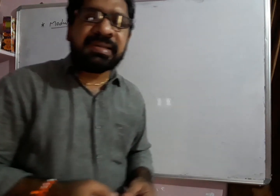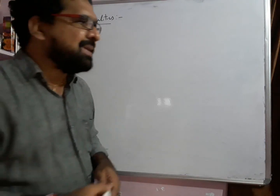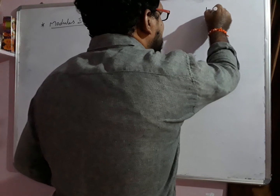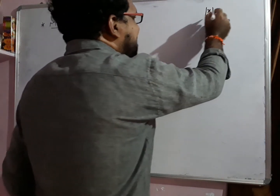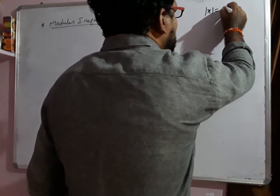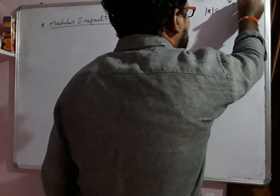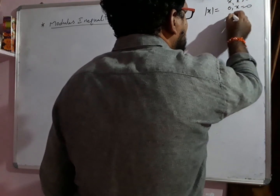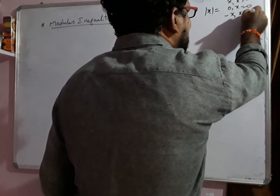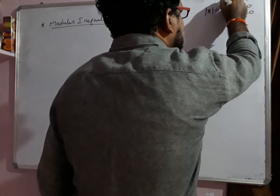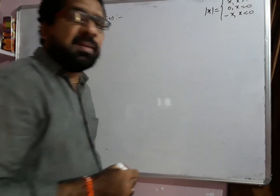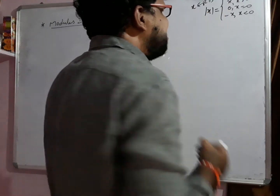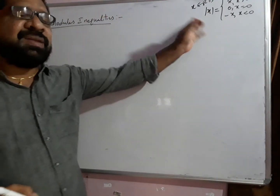Before we discuss about modulus inequalities, let's recall the definition of modulus. We already covered this in a previous video. Mod x is equal to x when x is greater than 0, mod x is equal to 0 when x is equal to 0, and mod x is equal to minus x when x is less than 0. This is the definition of mod x whenever x is a real number.